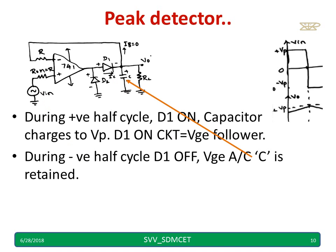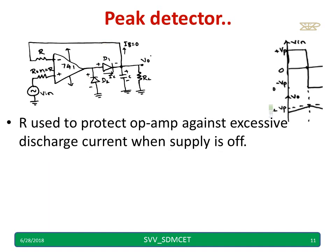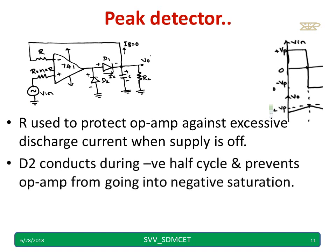The voltage across the capacitor will remain as it is because D1 is off and RL is very high, and the input bias current IB is negligible. If RL is not sufficiently high, you can take a buffer. R is used to protect the op-amp against excessive discharge current when the supply is off. D2 conducts during the negative half cycle, and it prevents the op-amp from going into negative saturation.